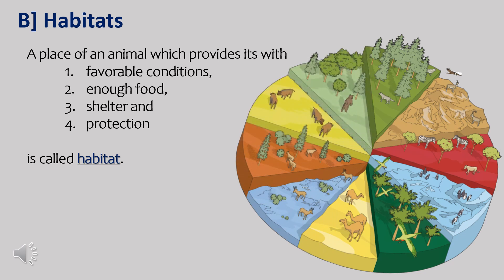A place where an animal lives which provides it with favorable conditions, enough food, shelter and protection is called its habitat. A habitat is the natural home of an animal. Some animals live on land while some live in water. Some animals live on both land and in water while some spend their lives on trees. Animals develop some adaptations to be able to live in their habitats and protect themselves from enemies.